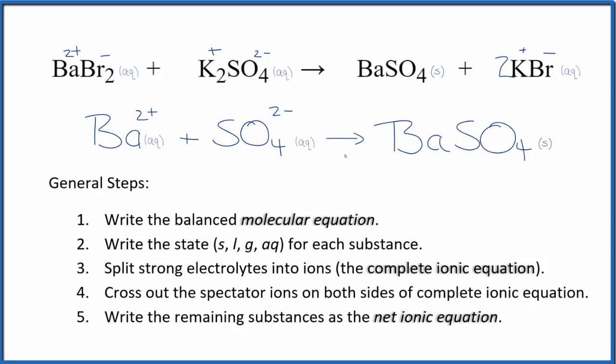If you look at the atoms, they're balanced. Same on both sides. And the charge is balanced, too. We have a two plus, two minus. That gives us a net charge of zero in the reactants. Products, this is a neutral compound, net charge of zero.